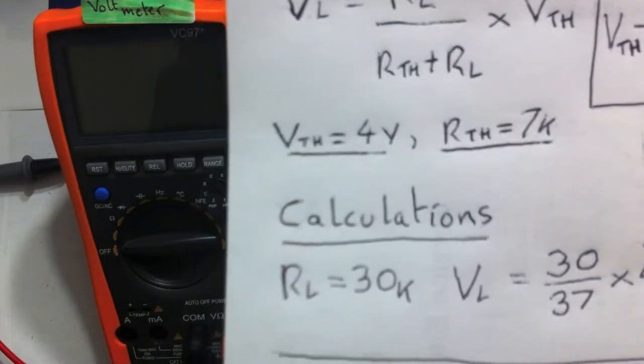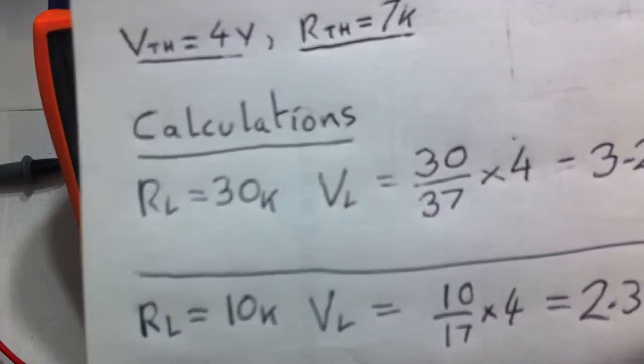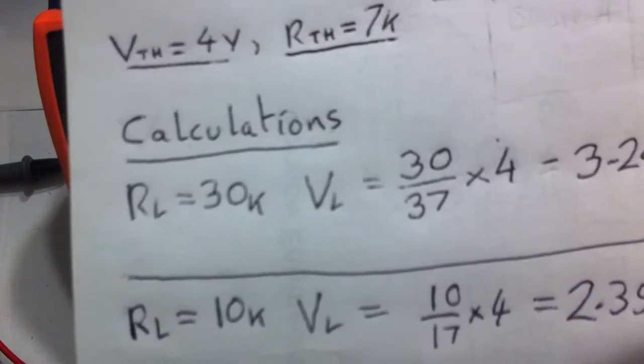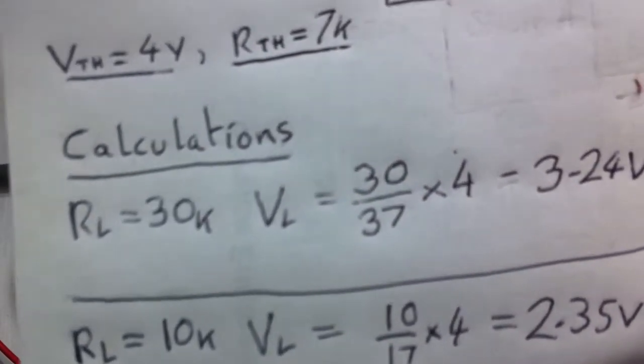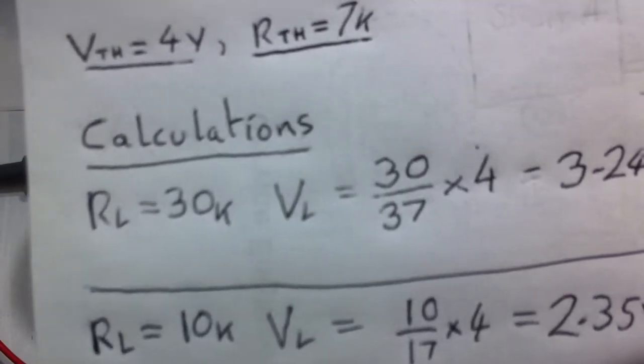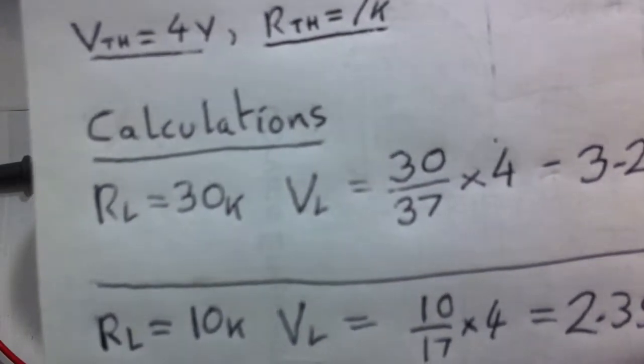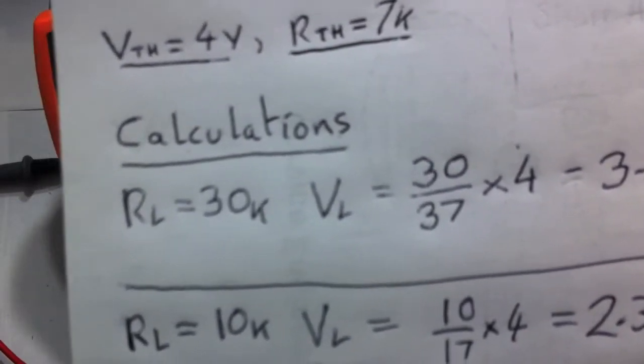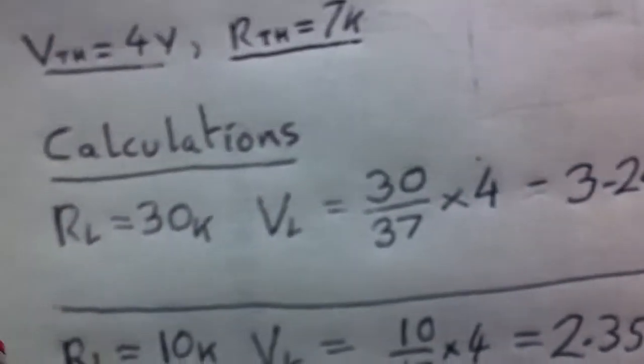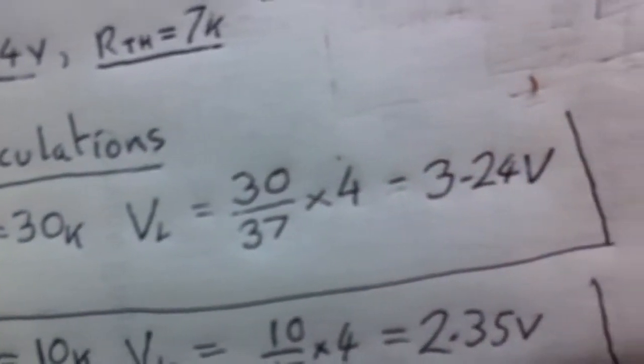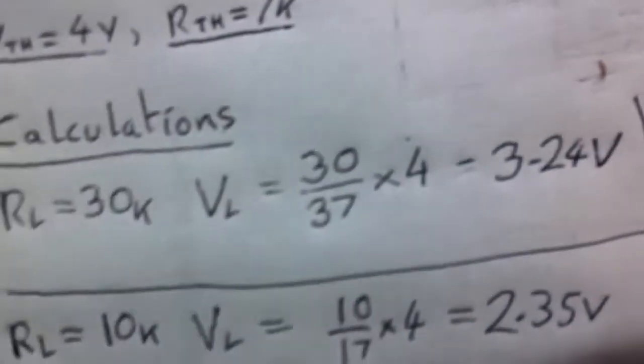So it's simply RL over RTH plus RL. So the first one we're going to choose is 30. So that's 30 over 30 plus 7k. The k part's just a proportion, so 37 units. So it's 30 units of the 37 total units dropped across the load times the Thevenin voltage. And that gives us 3.24 volts.